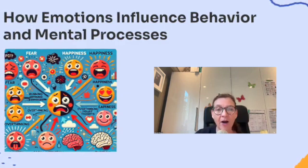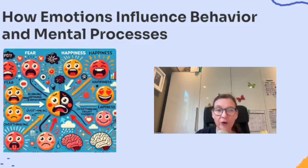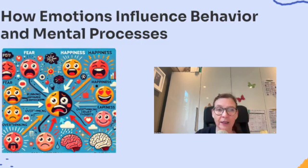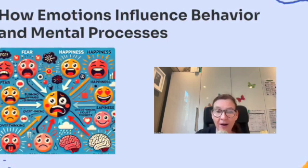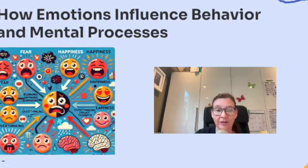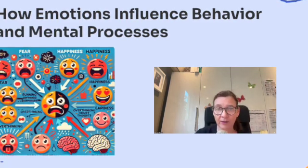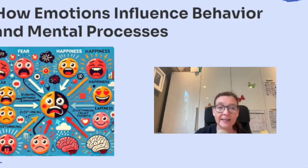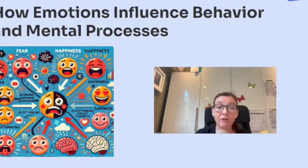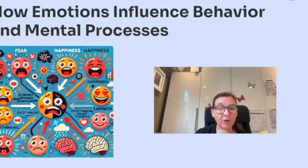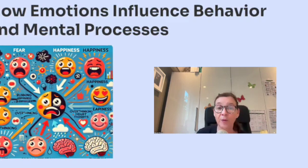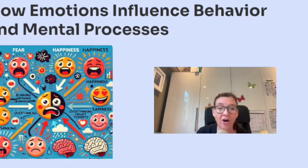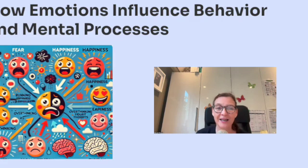Now let's look at how emotions affect our thoughts — our mental processes. When you feel anxious, have you ever noticed how your mind can get stuck in a loop of overthinking? That's your emotions influencing your mental processes. But when you're excited, your brain might focus on all the positive possibilities, making you feel more optimistic and ready to take on challenges. For example, imagine you have a big test tomorrow. If you feel anxious, it might lead to overthinking and second-guessing every answer while you're studying. But if you feel excited about showing off what you know, that might help you focus better and think more clearly.